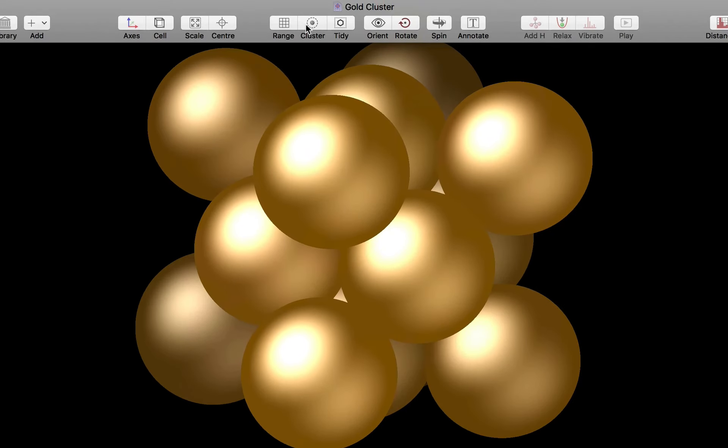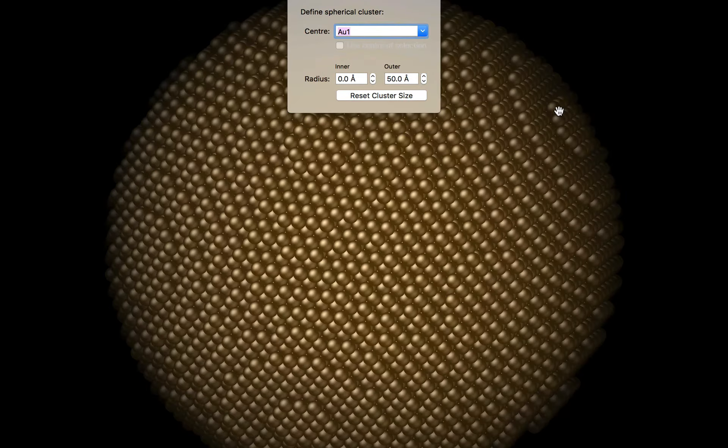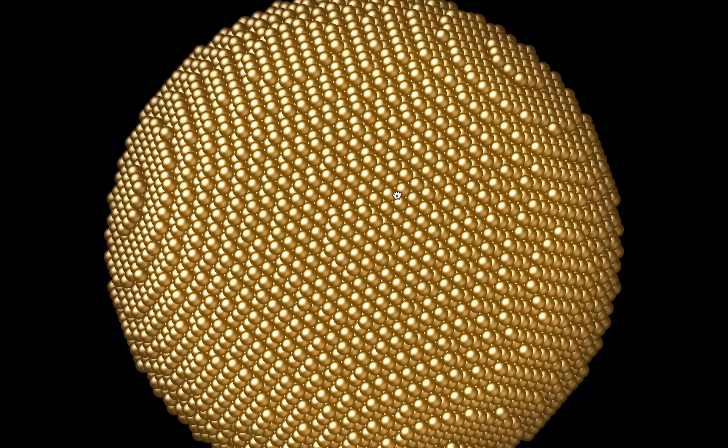So we'll go to the cluster command and then we need to enter the size of our cluster. We have a 50 angstrom cluster that we'll define. This is the radius that will make the actual size of the cluster diameter 100 angstroms. So here is our 100 angstrom nanoparticle of gold.